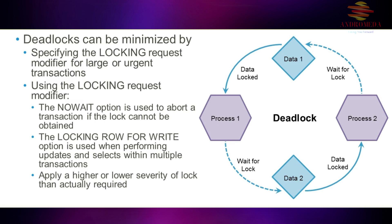The locking row for write option is used when performing updates and selects within multiple transactions. You want to make sure updates happen before any select occurs, ensuring that records are written and locks are released before you then select those records.